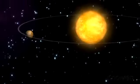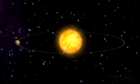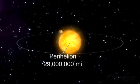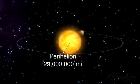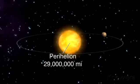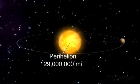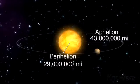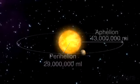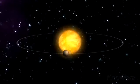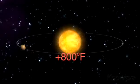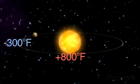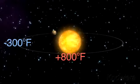Mercury has a highly elliptical orbit. At its closest point it is 29 million miles from the Sun, but at its farthest point it's 43 million miles away. For this reason, surface temperatures can vary from 800 degrees Fahrenheit to a frigid 300 degrees below zero.